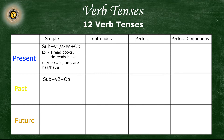The helping verbs that we use in simple past tense are: did, was, were, and had. The example sentence for this tense is: 'I read books'.